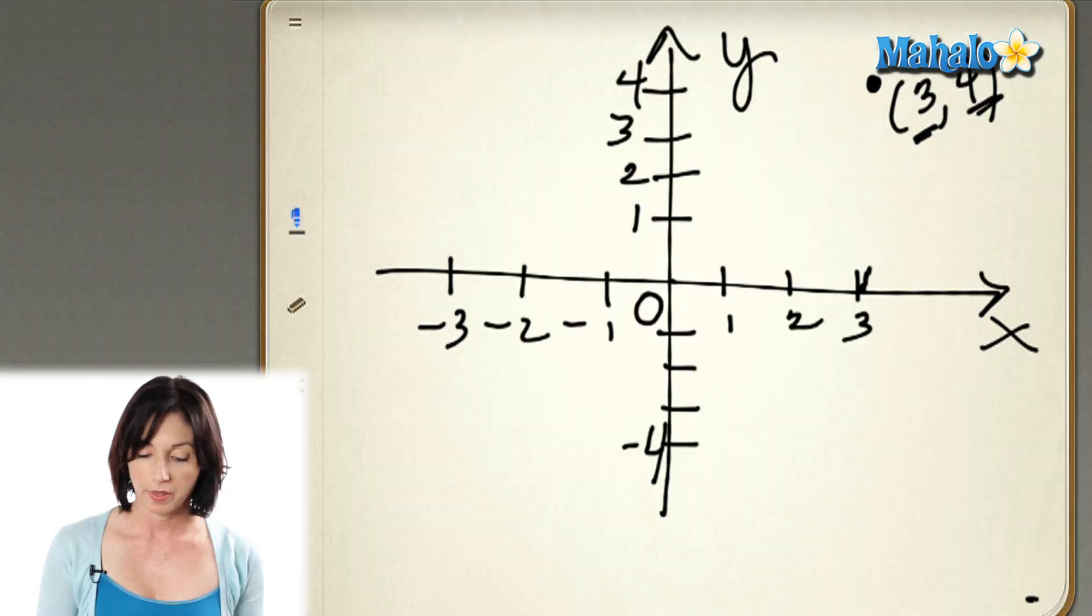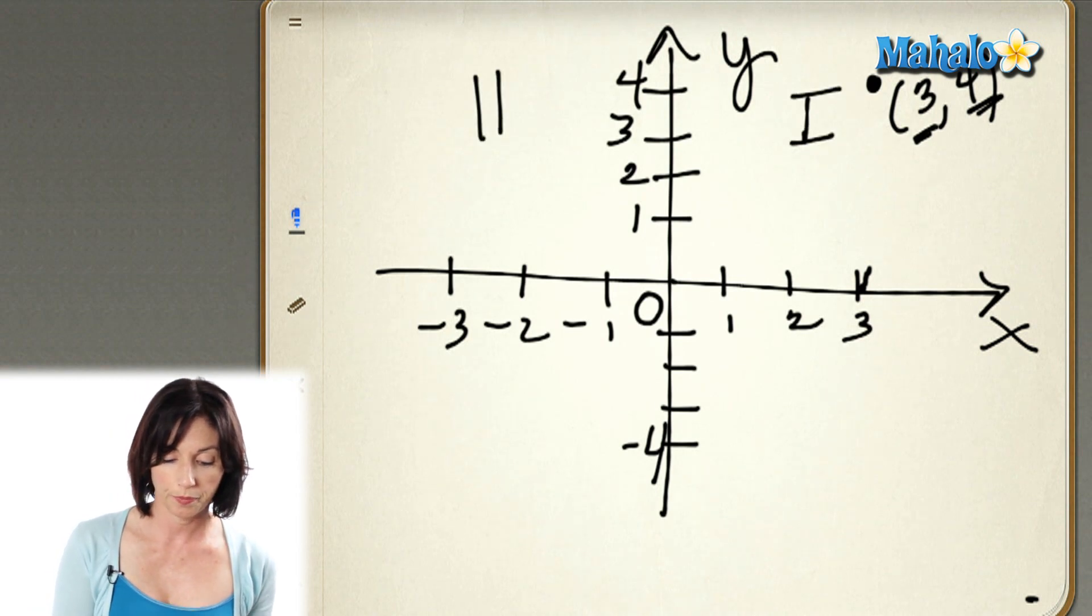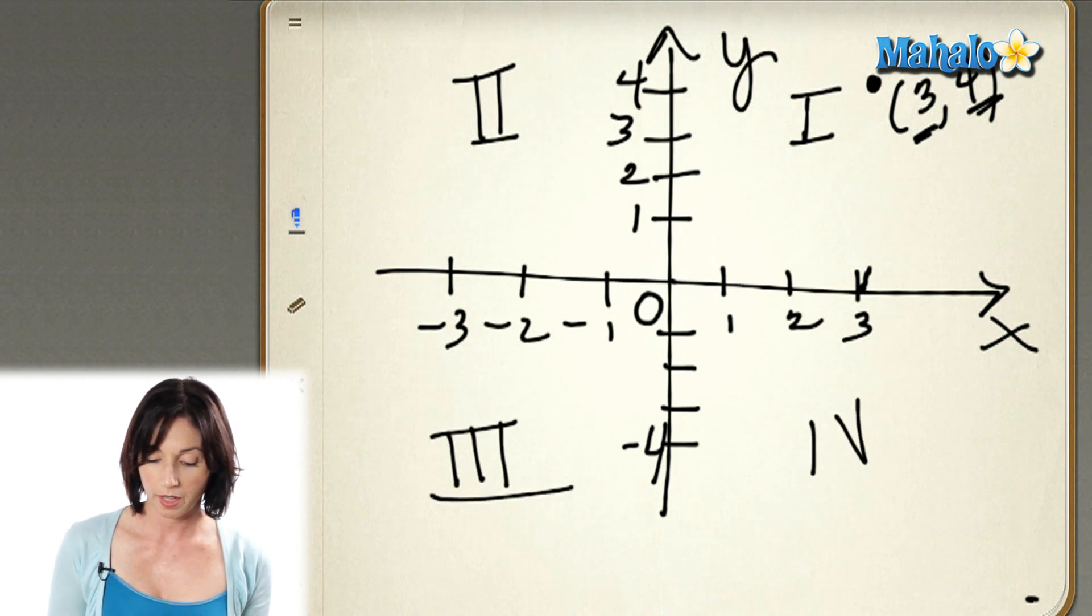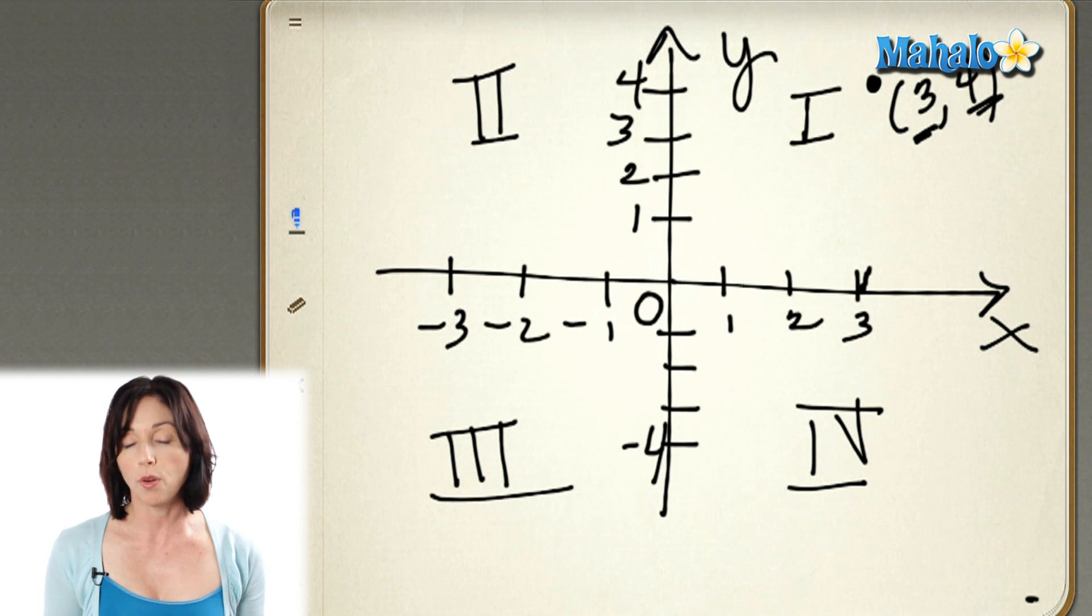Now, you can actually tell where a point will be on the coordinate plane just by looking at the signs. The coordinate plane is split into four quadrants. This is quadrant 1, this is quadrant 2, this is quadrant 3, and this is quadrant 4. So they go counterclockwise, they're numbered counterclockwise.